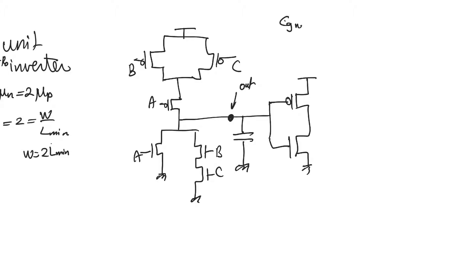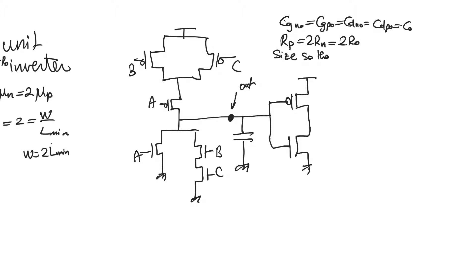In this case, let's assume that C_GN = C_GP = C_DN = C_DP = C0. Let's also assume that R_P = 2R_n = 2R0. We want to size so that the worst-case resistance is equal to that of the unit inverter — meaning the worst-case resistance, whether in pull-down or pull-up, in T_P_high-low or T_P_low-high, is always equal to that of the unit inverter.